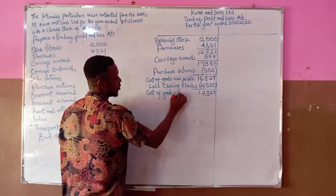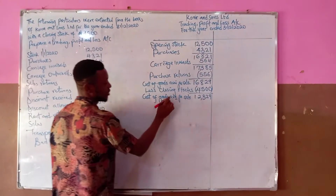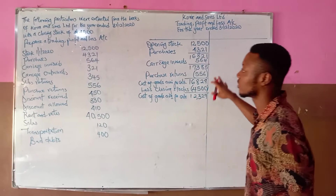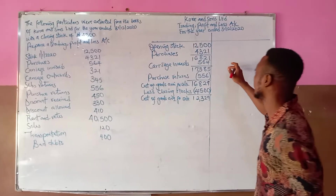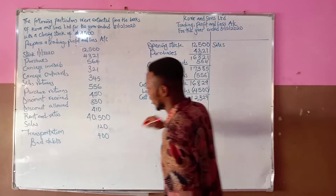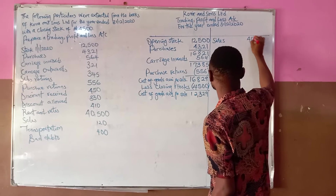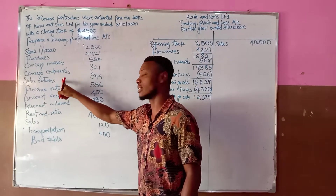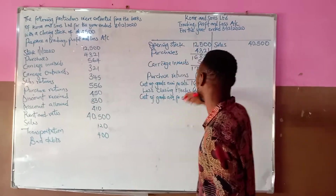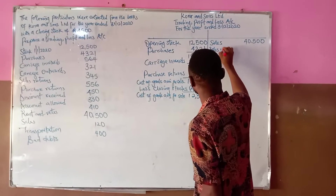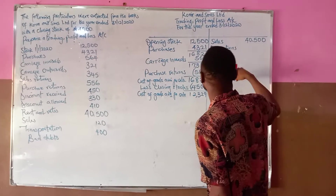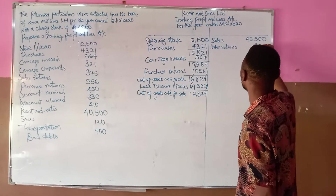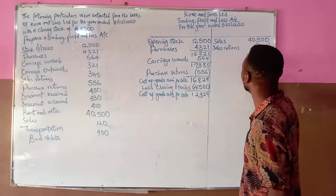Moving to the credit side, we record sales. The total sales figure is 40,500. We then check for sales returns — the amount of goods returned to the trader after being sold by the buyer. Sales return is 345, which is subtracted from sales.